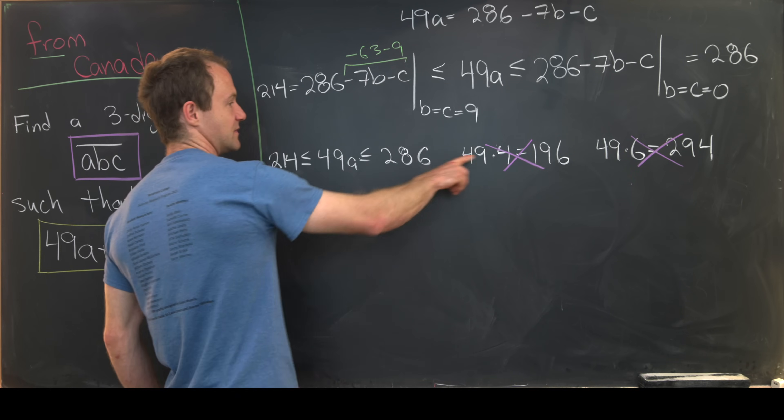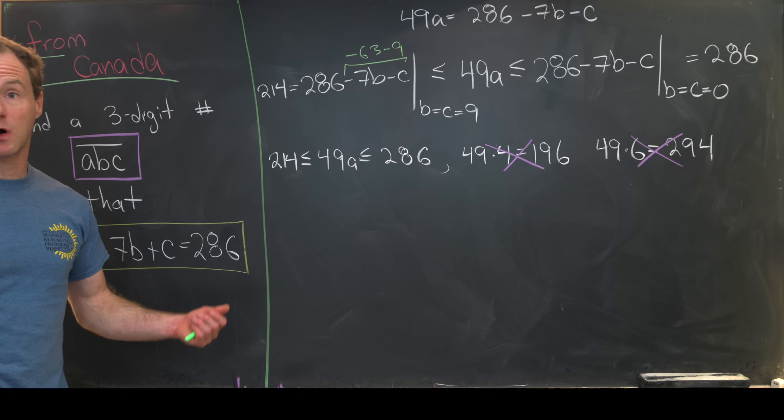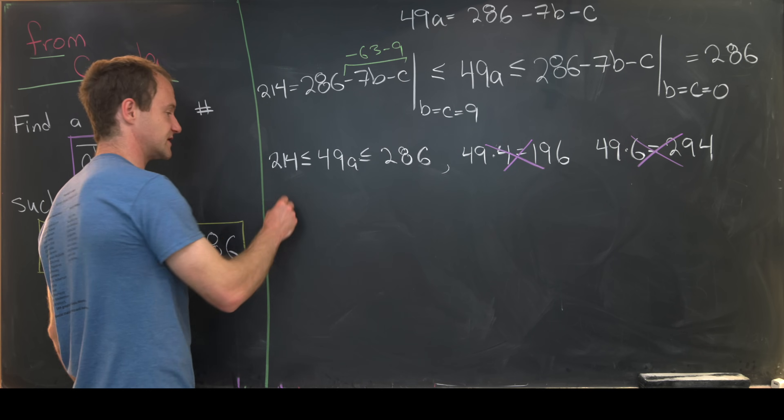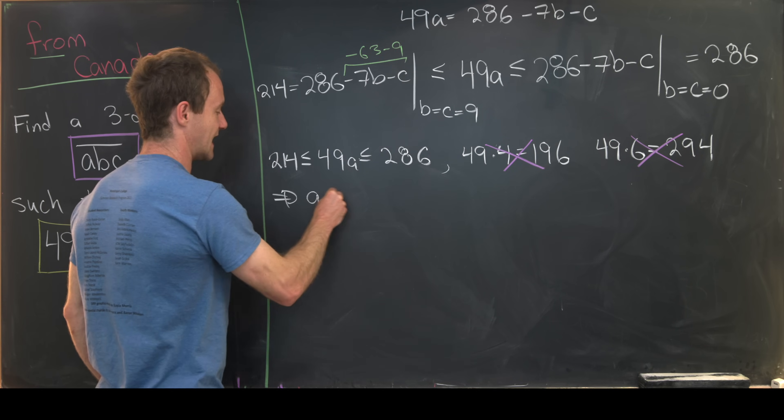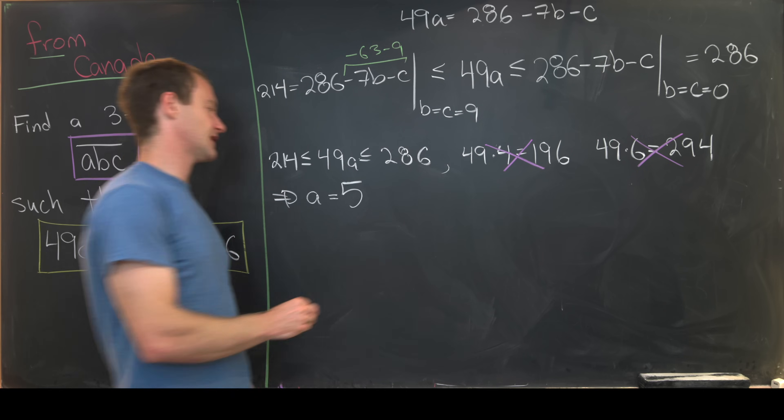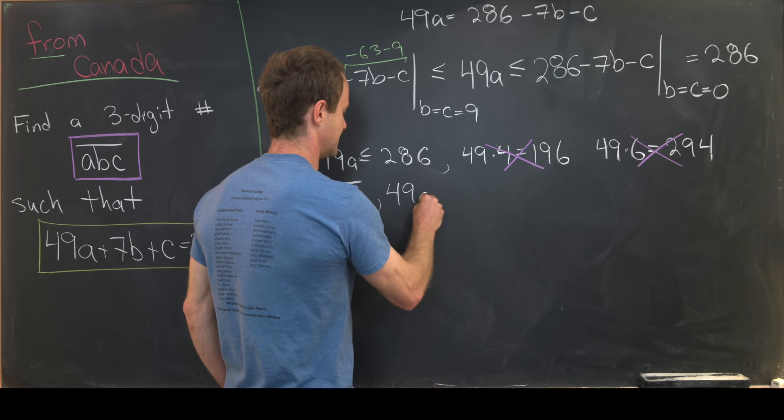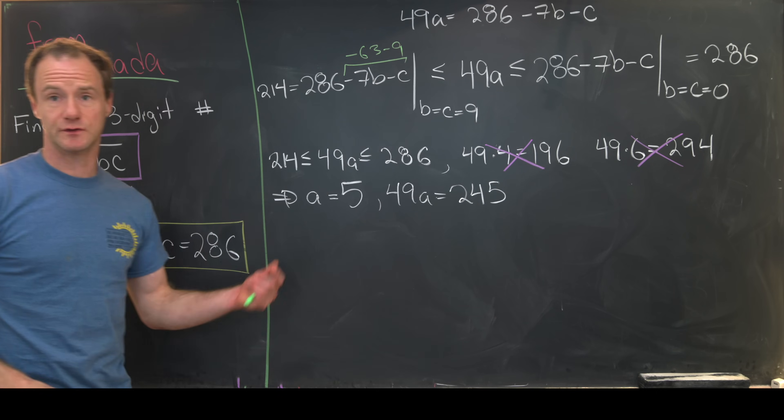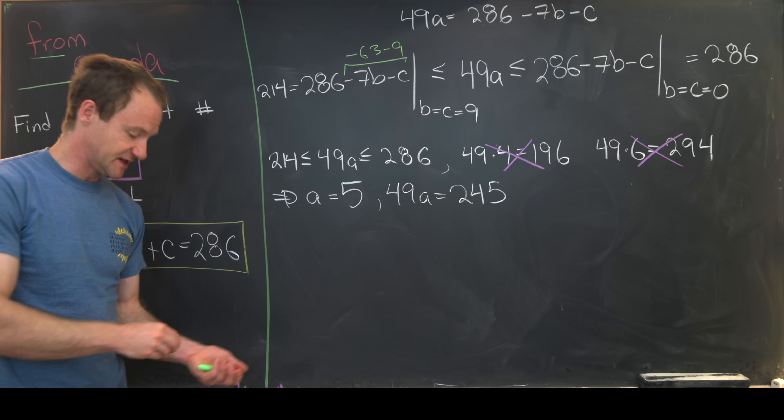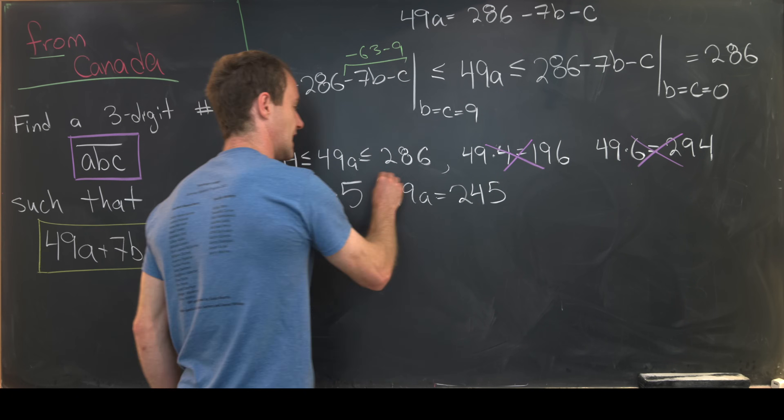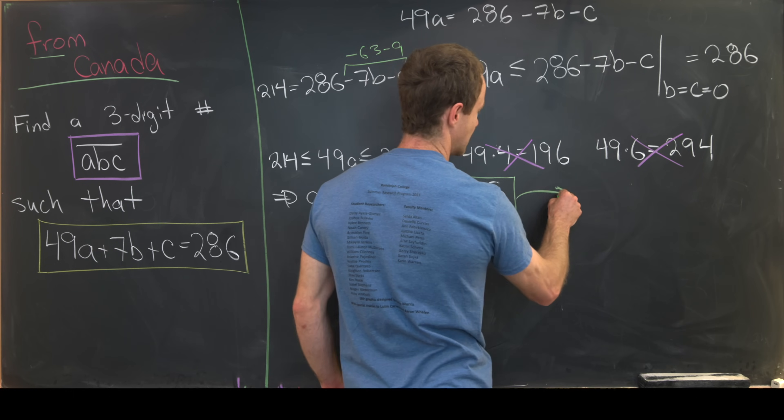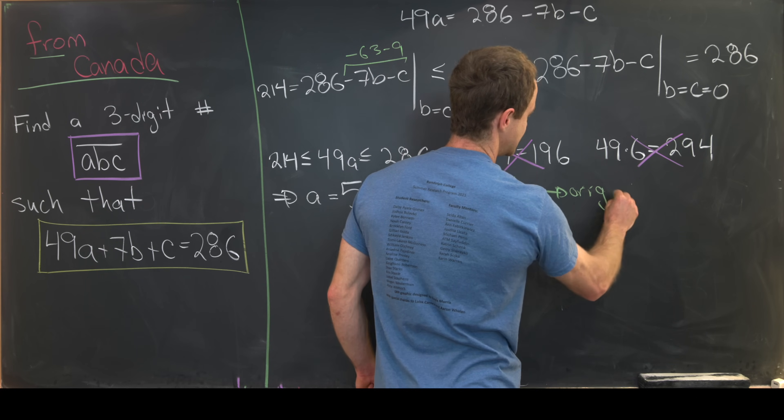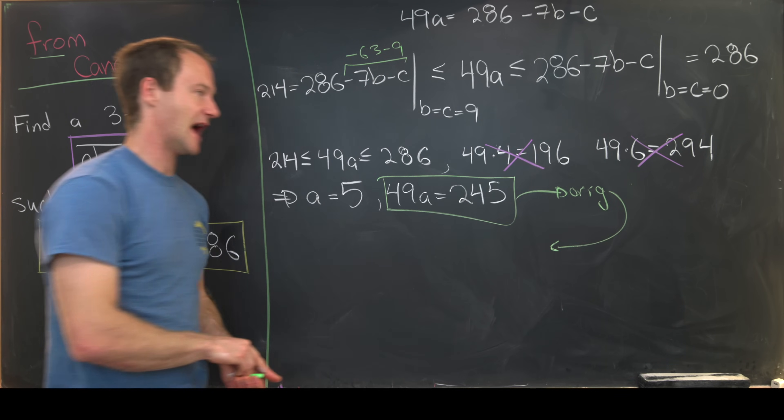So if A cannot be 4 because it's too small and A cannot be 6 because it's too large, that means that A has to be equal to 5. And then putting that into 49A, we get 245, which is actually going to be useful. So now let's plug this value, this 49A equals 245 into the original and see what that gives us.